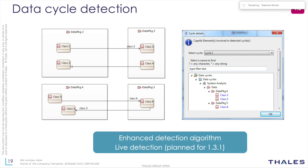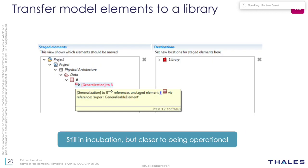In model validation, we've improved how data cycles are detected. This is particularly interesting when you want to generate code and don't want cycles or dependencies between packages. We've improved cycle detection and also improved how the tool helps the user find which elements are involved in the cycle — for example, a quick fix will say there's one cycle and the elements included are class three, class five, and class six. In the next version, Capella 1.3.1, there will be live detection of these cycles.